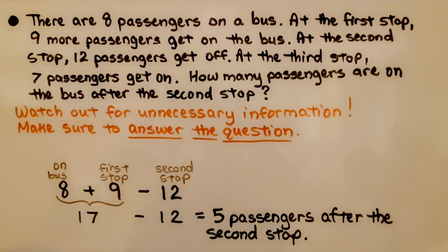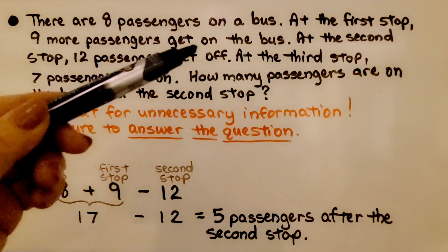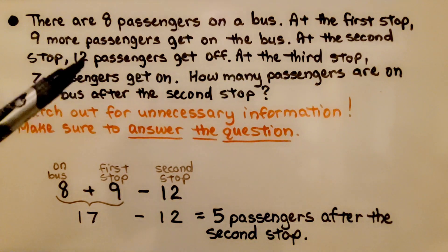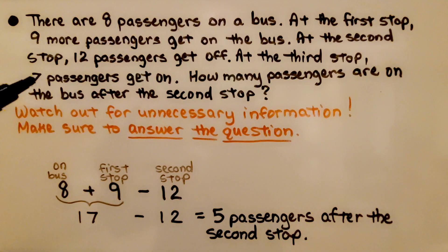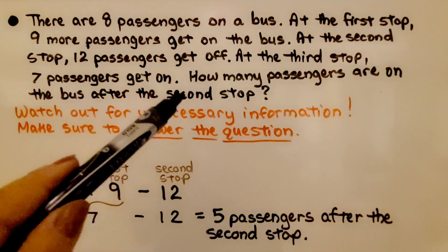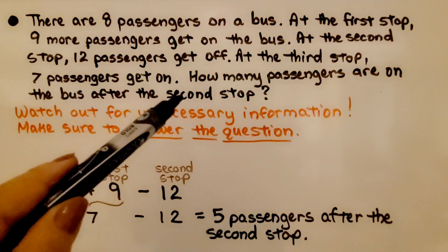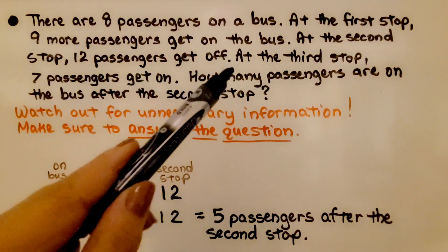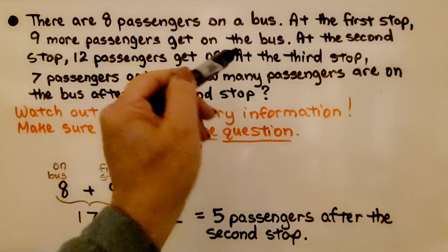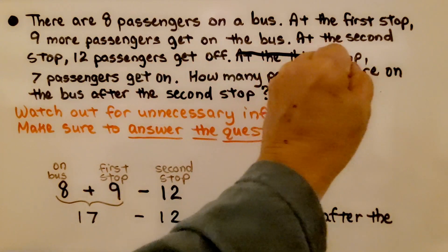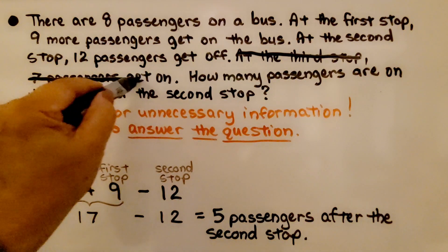In this problem, I'm going to show you how sometimes there's unnecessary information that can confuse you. There are eight passengers on a bus. At the first stop, nine more passengers get on. At the second stop, 12 passengers get off. At the third stop, seven passengers get on. How many passengers are on the bus after the second stop? The information about the third stop — seven passengers get on — is unnecessary information we do not need to answer the problem.